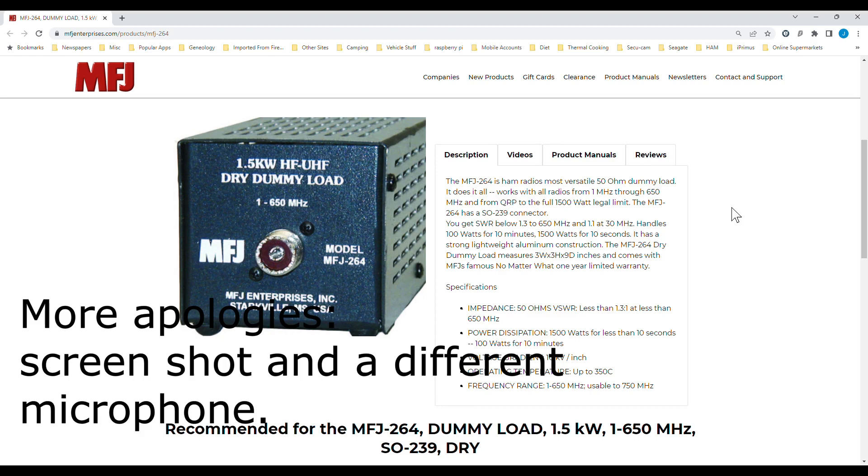Right, here we are on the web page for the MFJ264 and there's a brief look at the specifications for it. As you can see, they're talking about an impedance of 50 ohms, VSWR of less than 1.3 to 1 at less than 650 megs. We didn't see that and the reason for that I don't know.